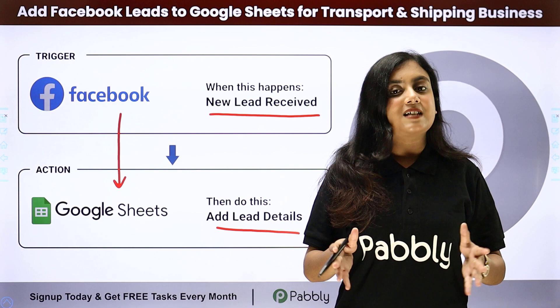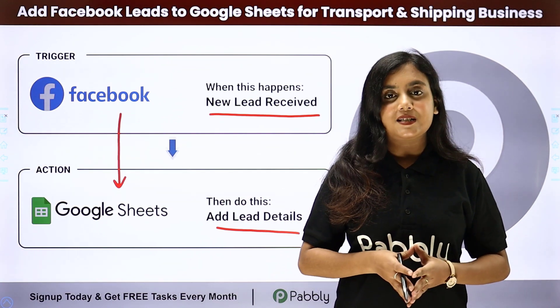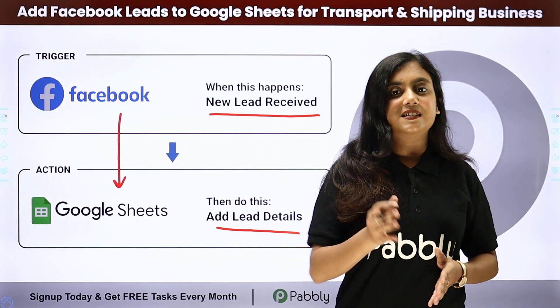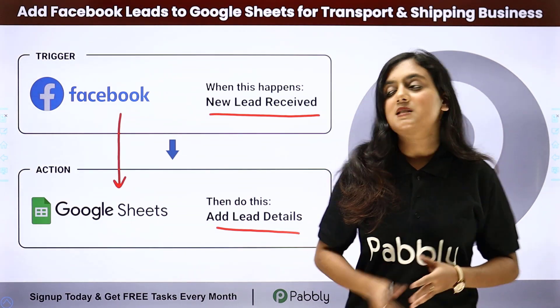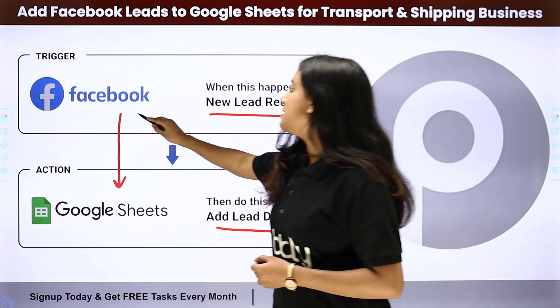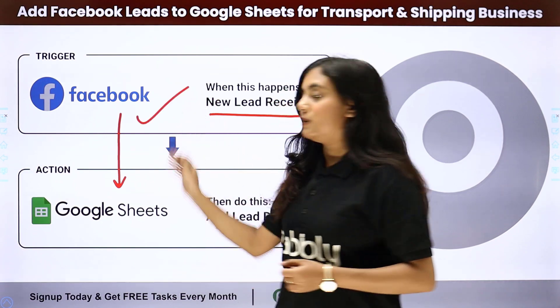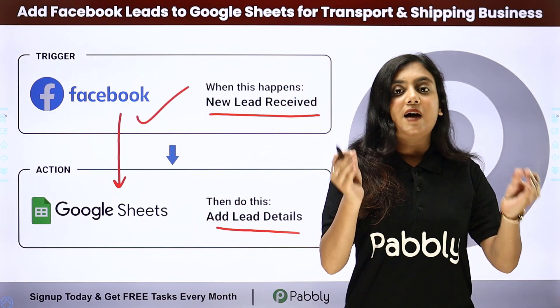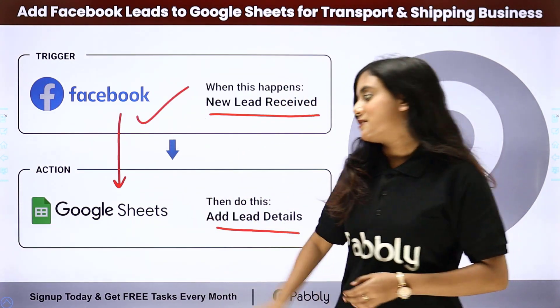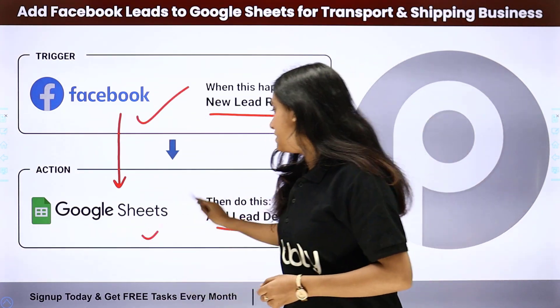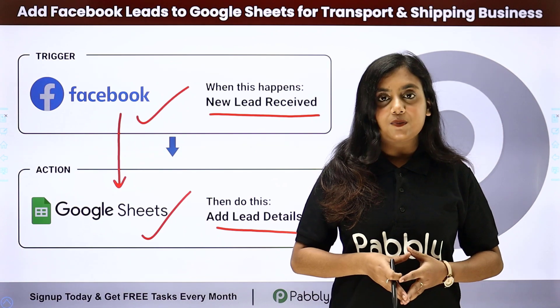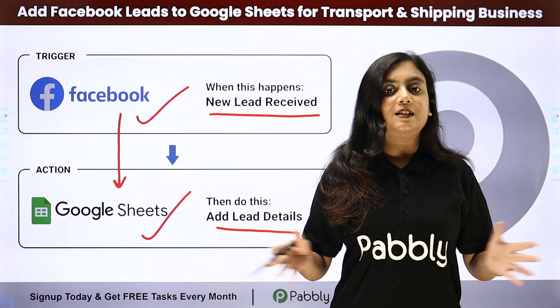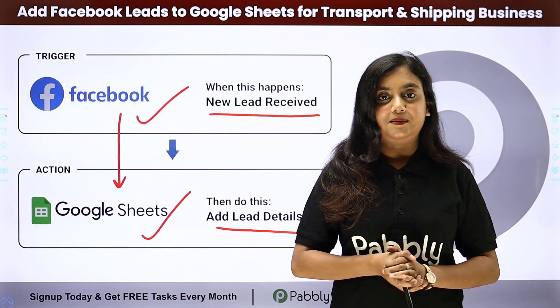In Pabbly Connect, to start an automation process we need triggers and actions. In this process, my trigger application is going to be Facebook lead ads and my action application is going to be Google Sheets. If you want to learn this automation process, let me take you all to my screen.